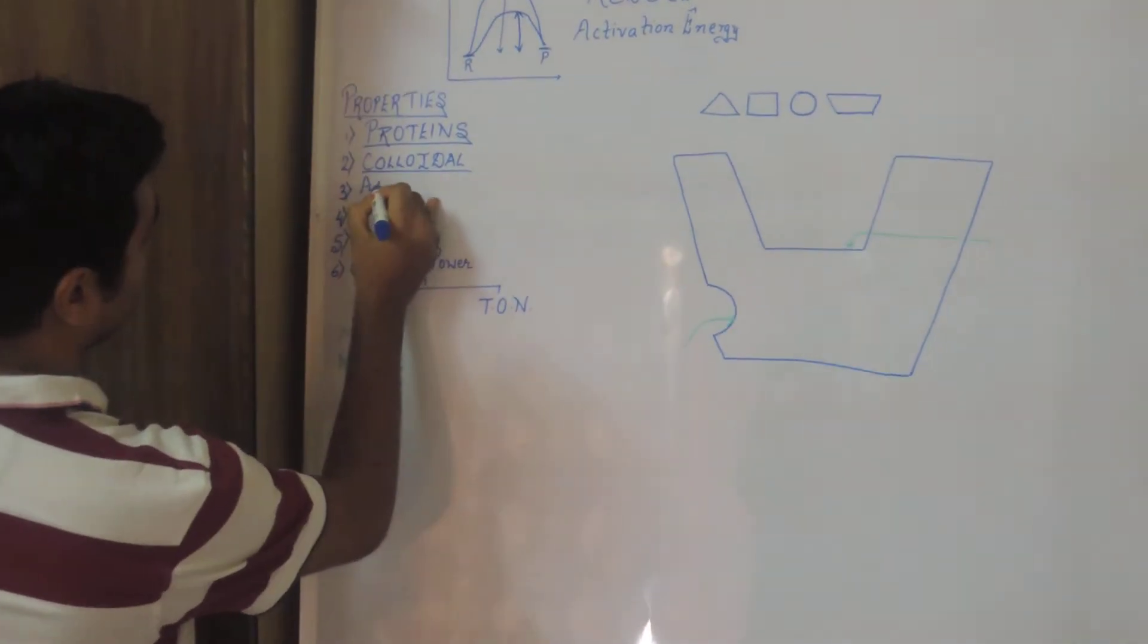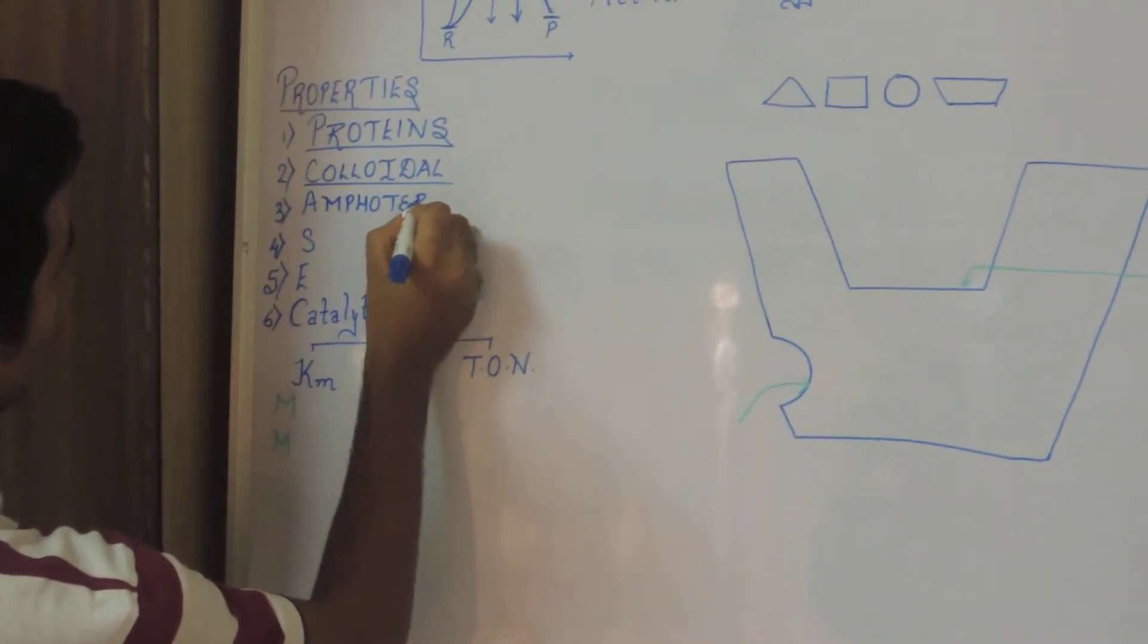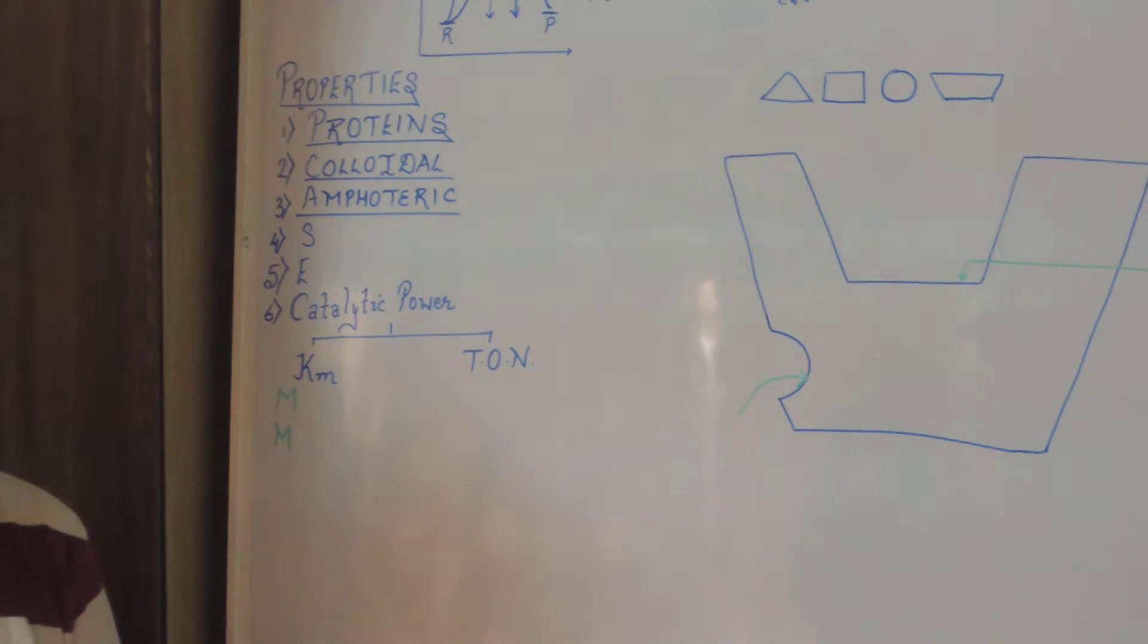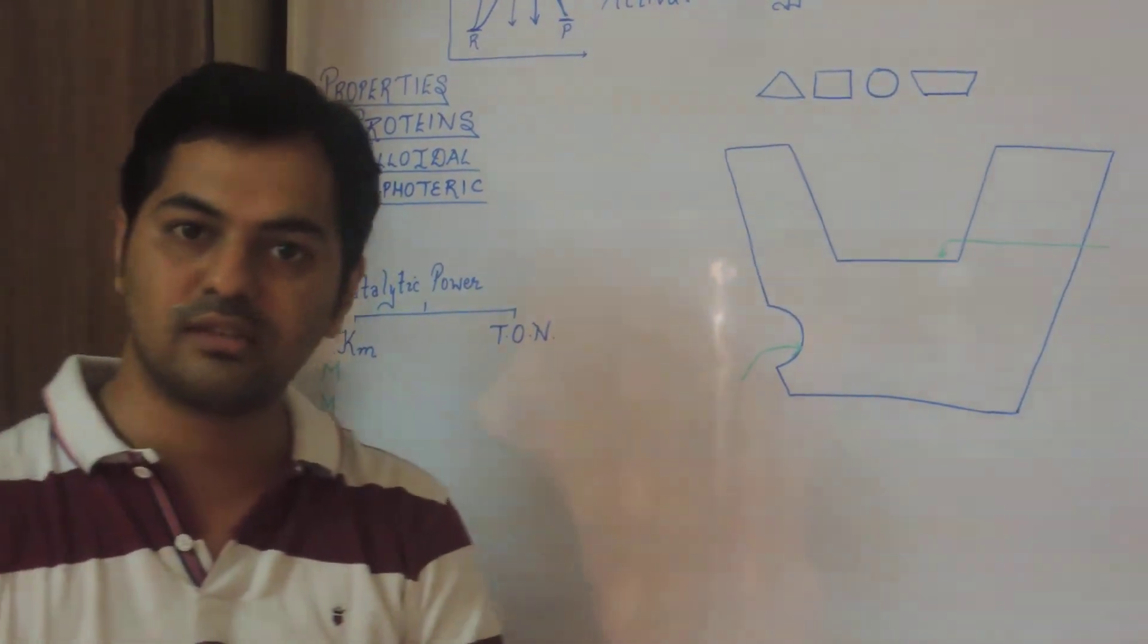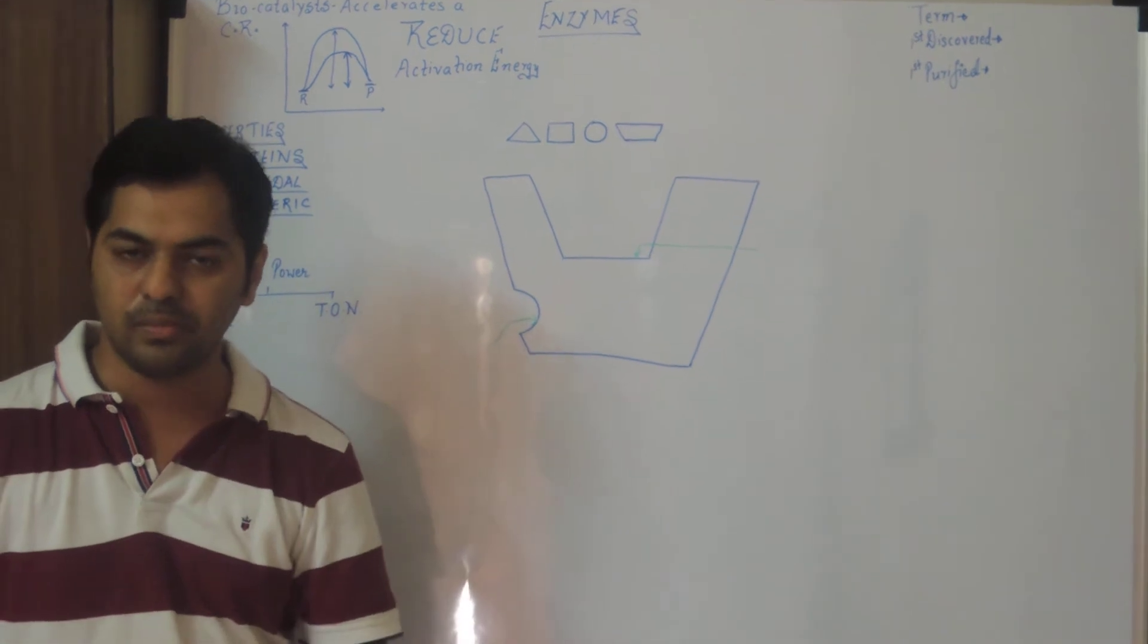Then enzymes can react well with acidic as well as basic compounds. That is why they are known as amphoteric in nature. So there are certain chemicals which react with acid and base. So even enzymes work at acidic pH also and at basic pH as well.